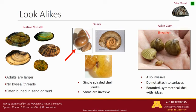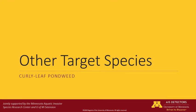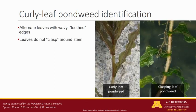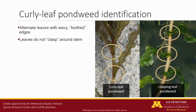The closest look-alike to the zebra mussel is the quagga mussel. The final target species you will be monitoring for is curly-leaf pondweed. Curly-leaf pondweed can be identified primarily by its leaves. It has alternate leaves with distinct undulate or wavy leaf margins, and if you look closely, you'll notice that the leaf margins also have small serrations or teeth. Curly-leaf pondweed leaves do not clasp or wrap around the stem. This is an important way to distinguish curly-leaf pondweed from other native pondweeds that have clasping leaves, which encircle the stem.